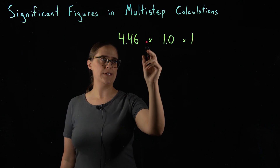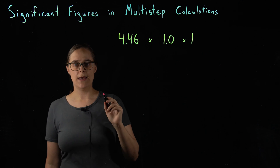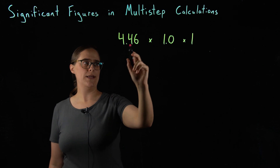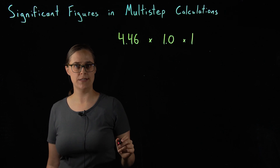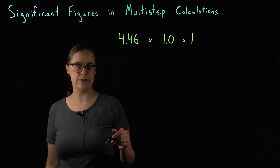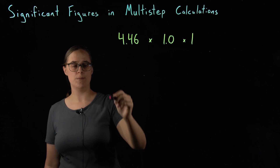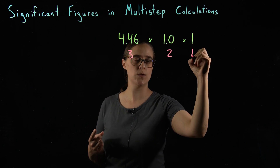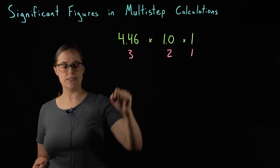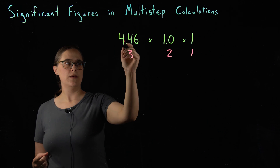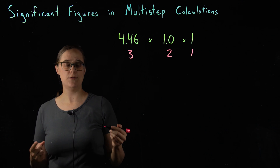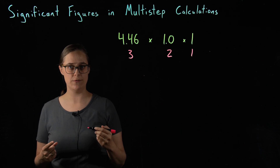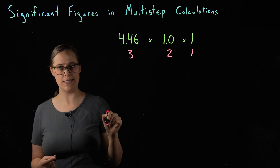Let's look at this problem: 4.46 times 1.0 times 1. Our significant figures rule for multiplication and division is that you determine how many significant figures are in each of the starting numbers, and whichever has the smallest number of significant figures, that is how many should be in your answer. 4.46 has 3 significant figures, 1.0 has 2 significant figures, and 1 has 1 significant figure. Our answer should have 1 significant figure. 4.46 rounded to 1 significant figure rounds down to 4, not up to 5. So 4 is our correct answer.